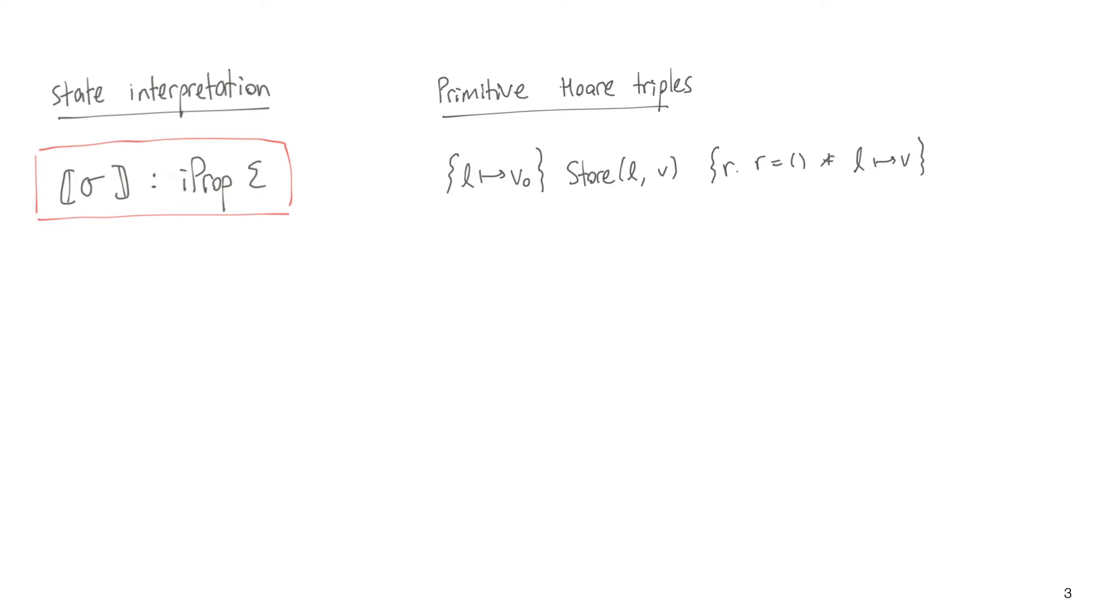The way that I'm going to explain the state interpretation is by showing how it appears in the definition of Hoare triples. And I'm not going to show the generic definition of Hoare triples, I'm just going to show what that definition boils down to for a specific example, namely for this Hoare triple for store. That way it'll be a little bit more concrete and maybe easier to see what the definition of WP really looks like.